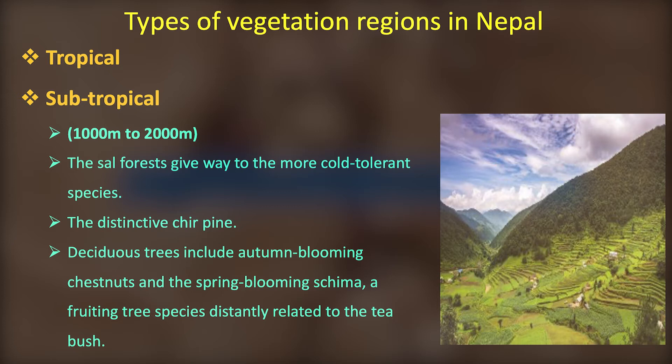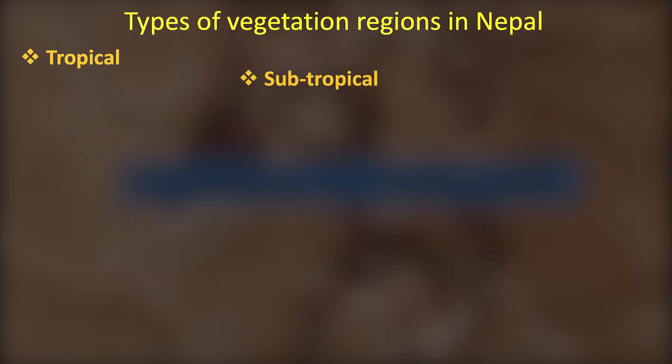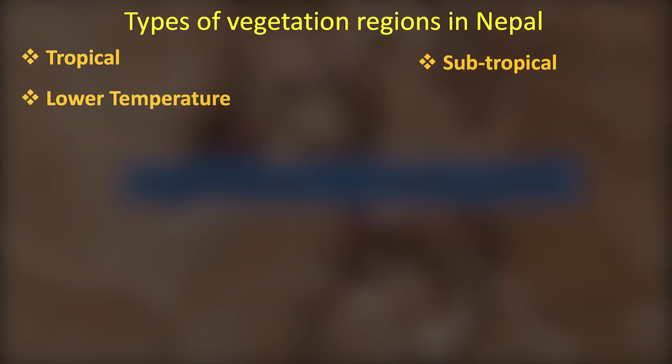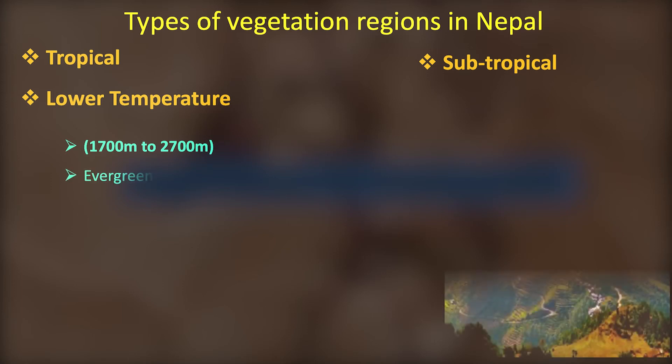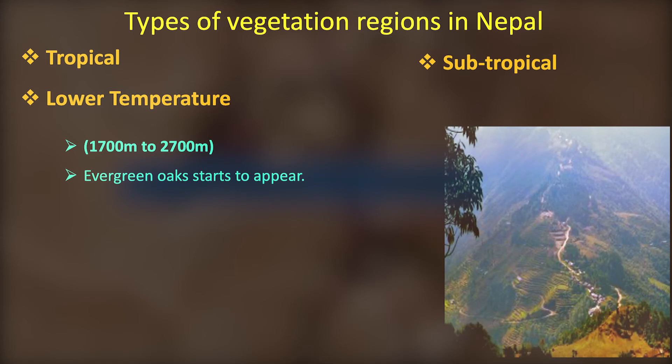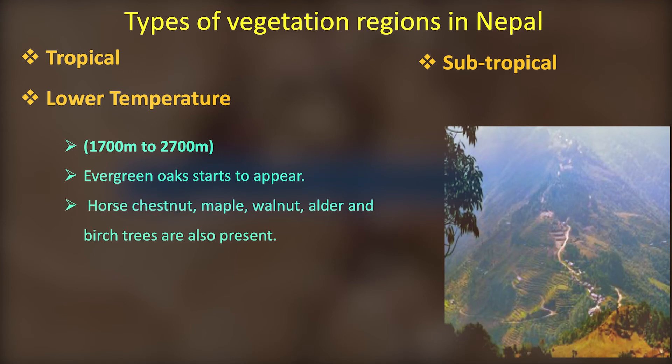Lower Temperature vegetation is found from 1,700 metres to 2,700 metres. There are mainly evergreen trees such as Oak, Horse Chestnut, and Walnut trees.